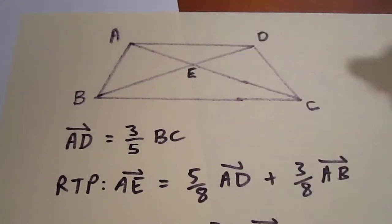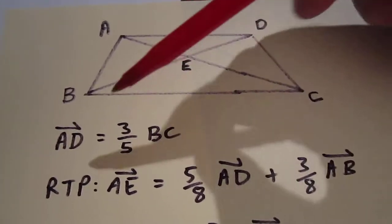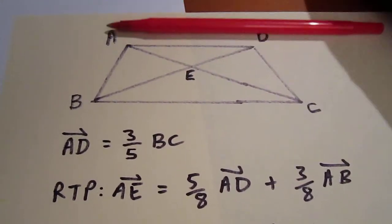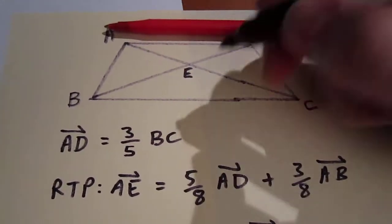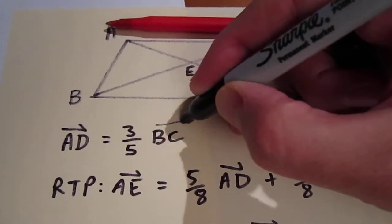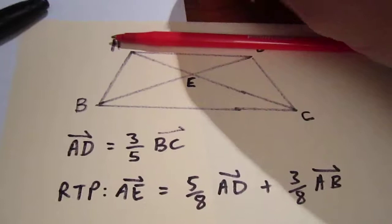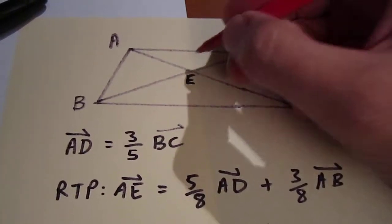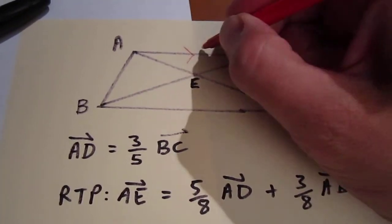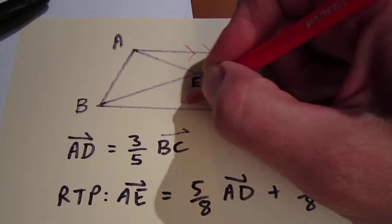It's convenient for us to know that AD equals 3 fifths of BC, partly because it tells us that the vectors are actually parallel - the sides of the trapezoid. So that tells us that this side is parallel to this side.